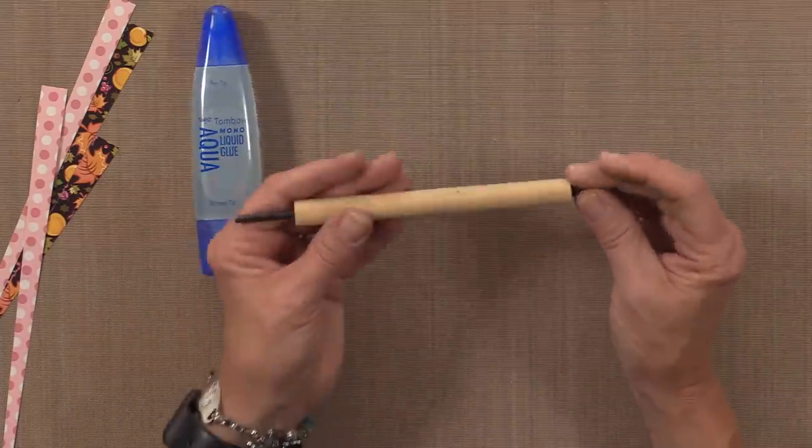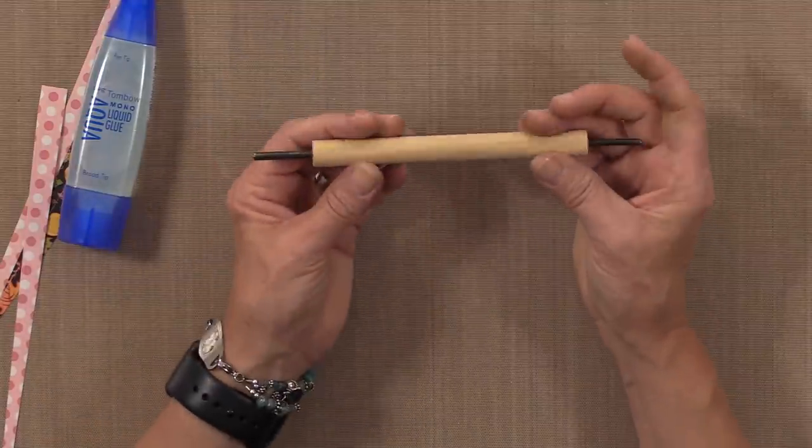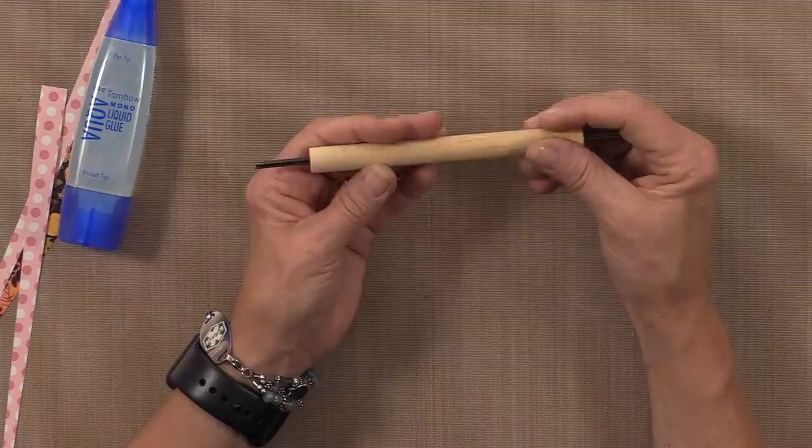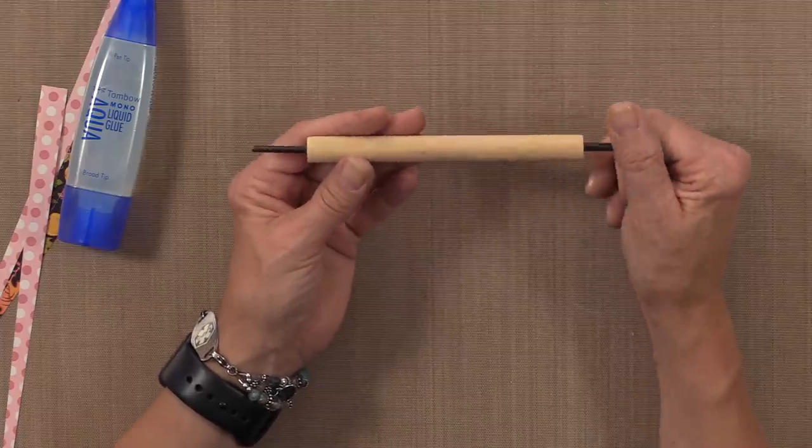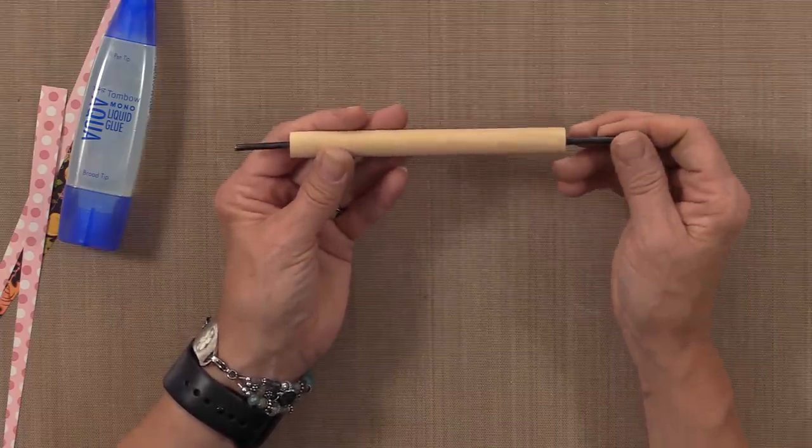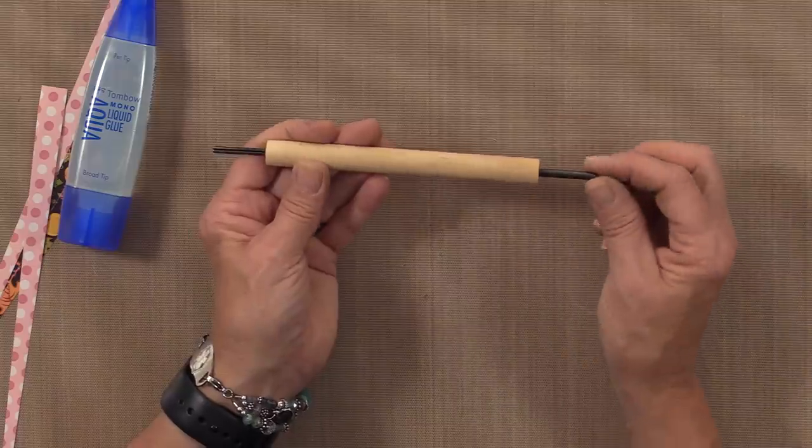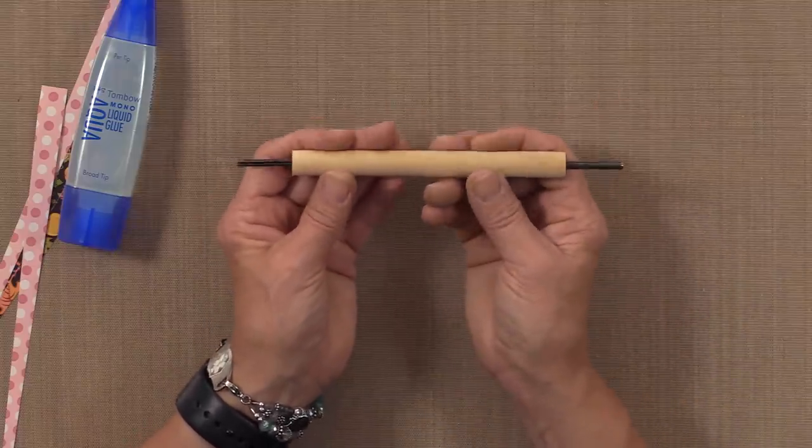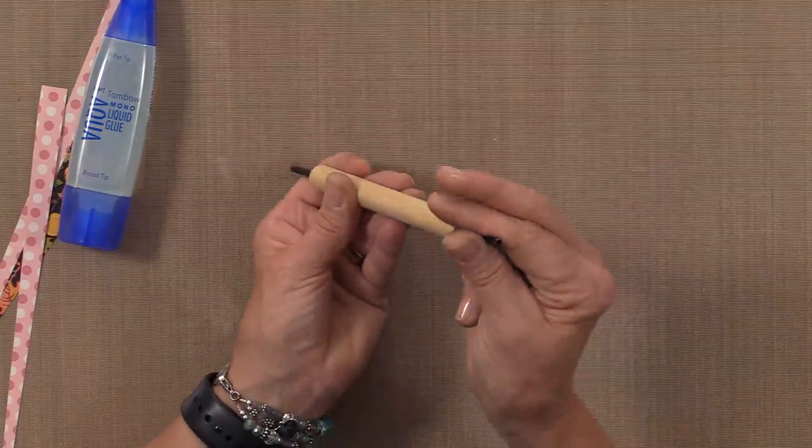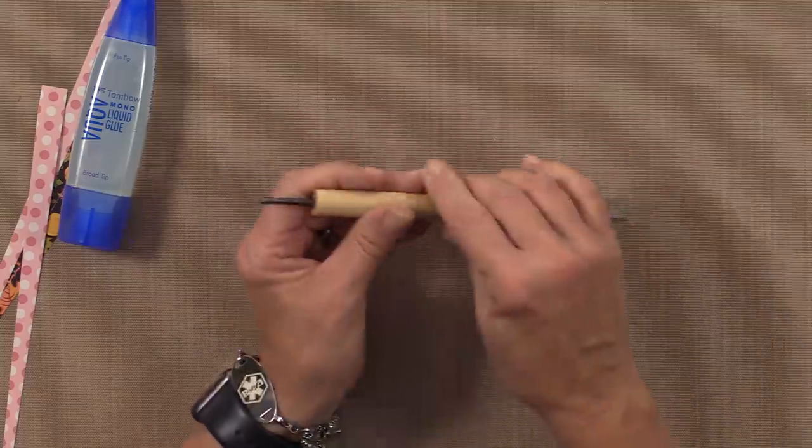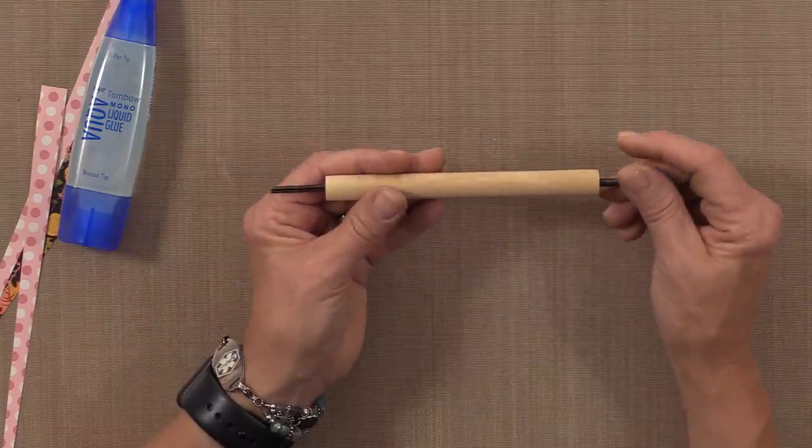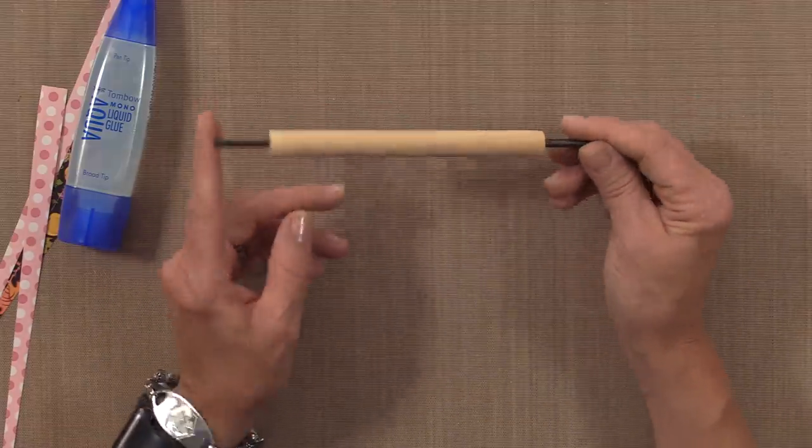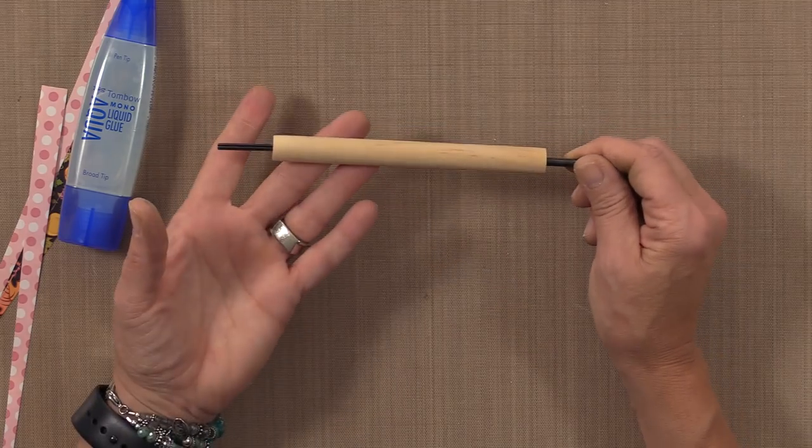Then I bought this tool on Etsy from a lady who sells paper beading strips. She sells paper beads and she sells these tools that she makes. And it has two ends. One is a little bit bigger than the other end. They're very similar to paper quilling tools. But they have a thicker point on the ends here. So I will also link her shop if you're interested in picking up one of these tools. And I think they were only like five or six dollars. So it's pretty cheap.